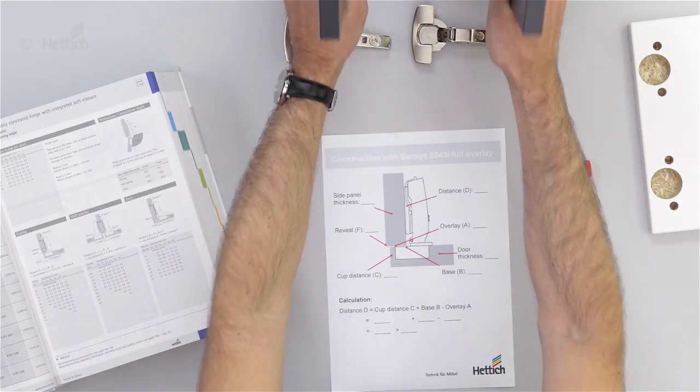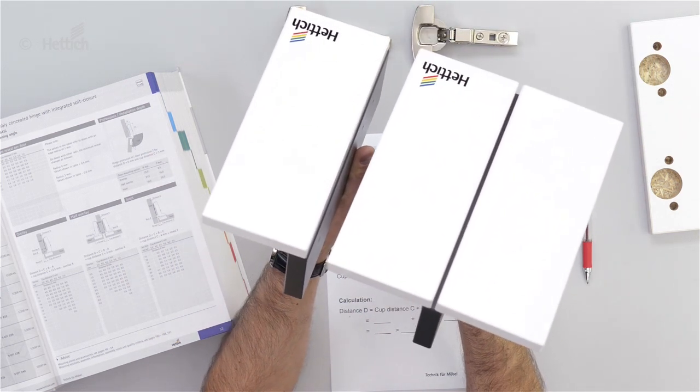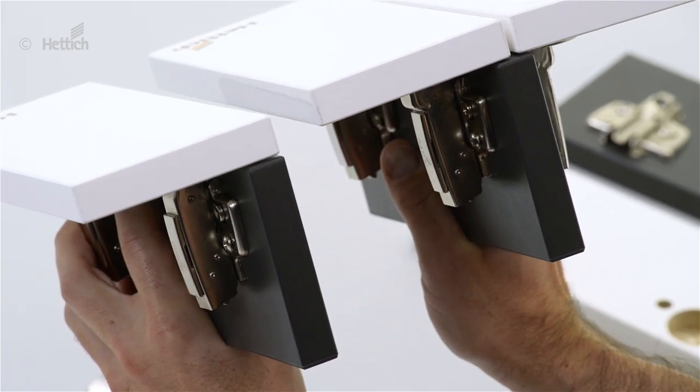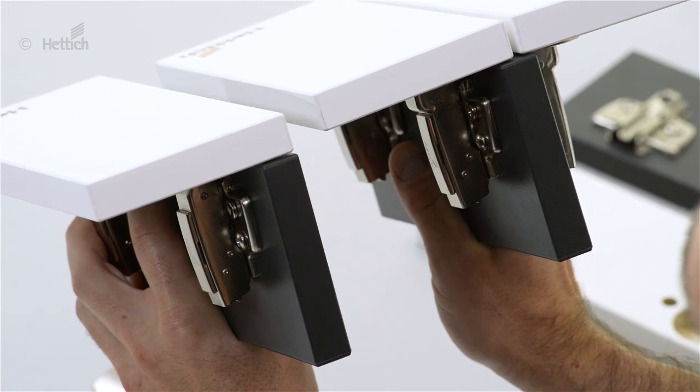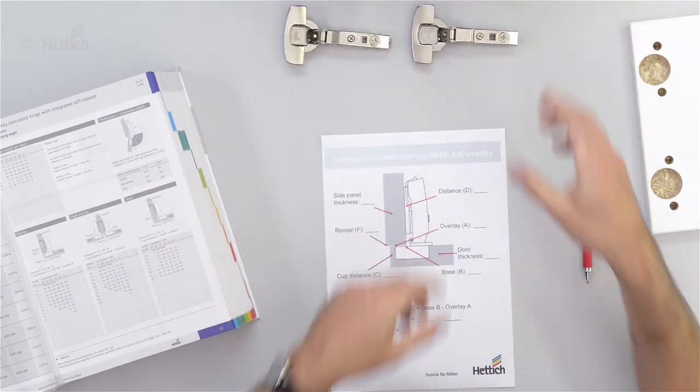We can also have a look here on the mock-ups and you see that there is a different shape of the hinge arm which gives us the base B of the hinge, what we need for calculating the mounting plate distance.